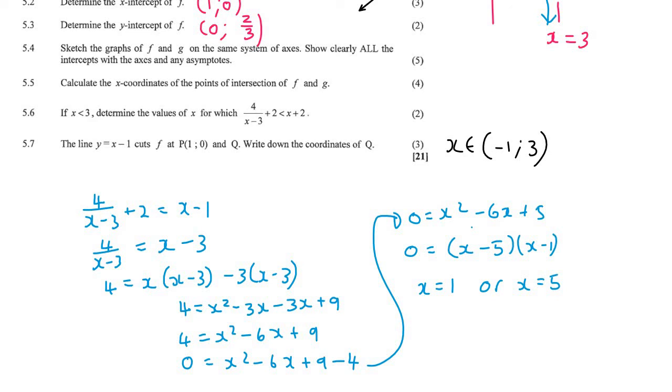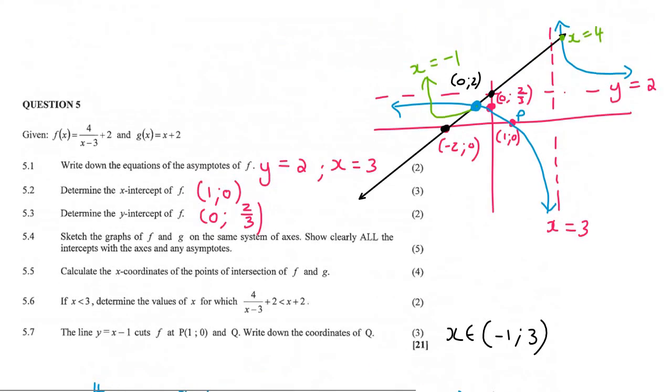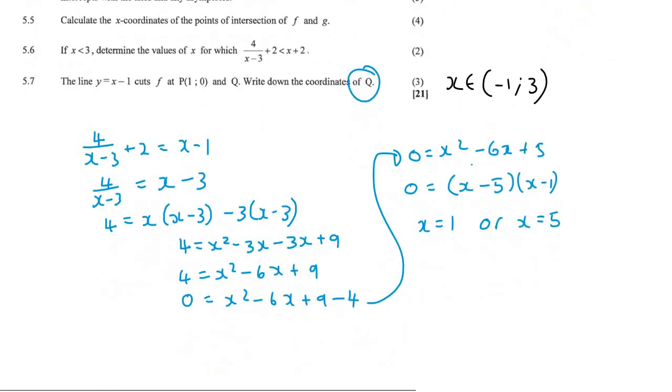But they've already told us that x equals 1. They've told us that that is the coordinates of P. So Q would be the other one. And so Q has an x value of 5. But now they've asked us for the coordinates, so we also need the y value. To find the y value, you plug the x into any one of the equations that we are using. So either you can use the line that we are using, or you can use the equation for F. Now I'm going to use the straight line because it's just a little bit easier. So we can say y equals x minus 1. And then x is 5. And so the y value is 4. And so the coordinates will be when x is 5, y is 4. And so that's the end of this question.